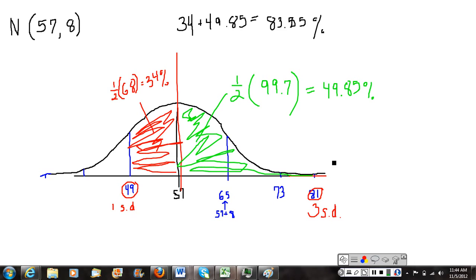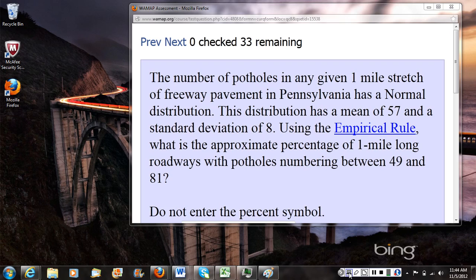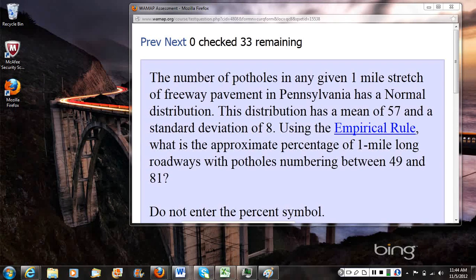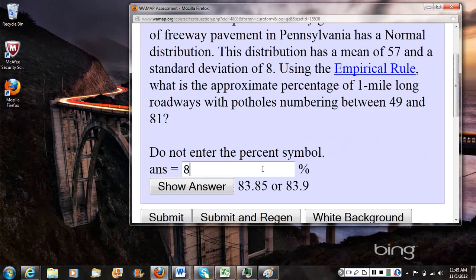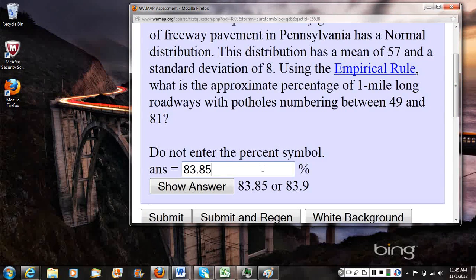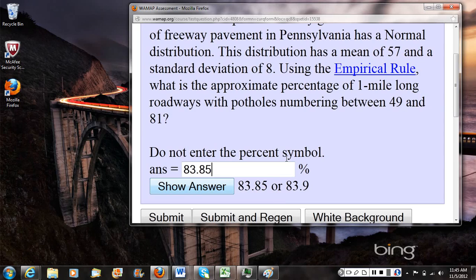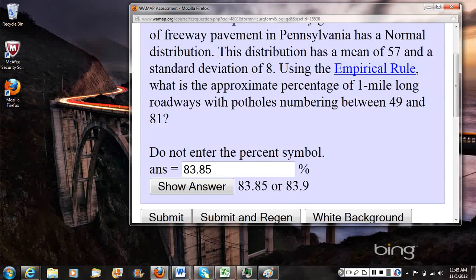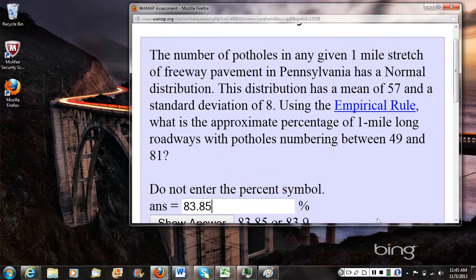So let's go back to our WAMAP and see how we want to enter that there. So they say, do not enter the percent symbol. But they want to know the approximate percentage. So we can keep it as a percent. We don't have to turn it into a decimal. We can write 83.85. They already got the percent symbol for us there. And there it is, 83.85. And it looks like on this question, if you round it up to 83.9, you would still get full credit. All right. I hope that was helpful. Thank you.